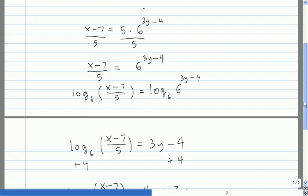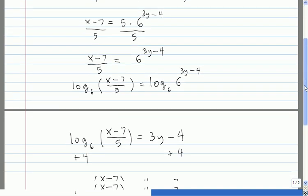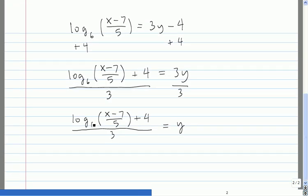So the inverse of the exponential function y equals 5 times 6 to the 3y minus 4 plus 7 is y equals log base 6 of x minus 7 over 5 plus 4 times 6, all divided by 3.